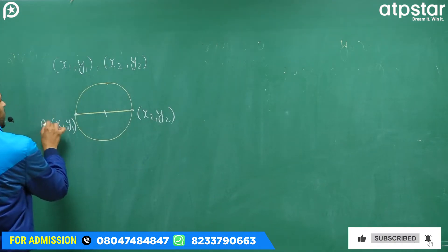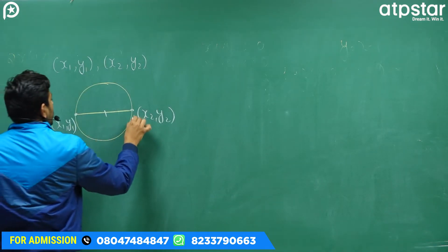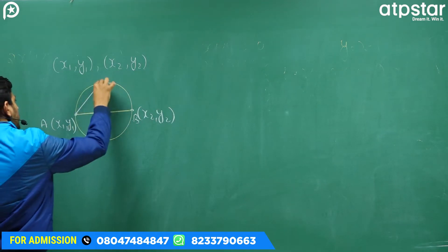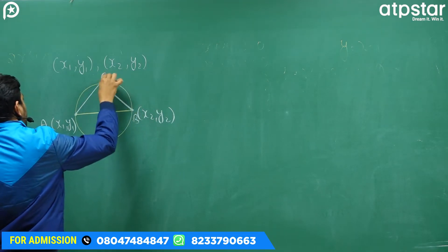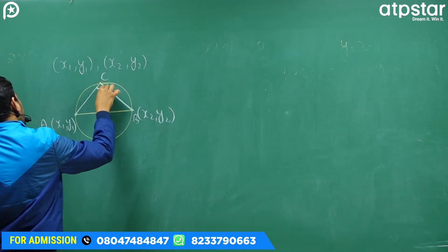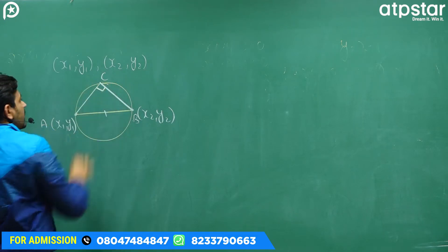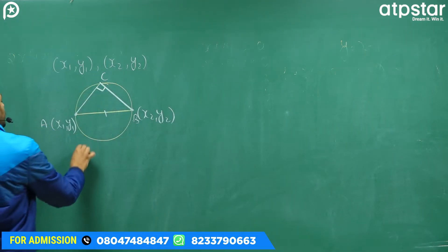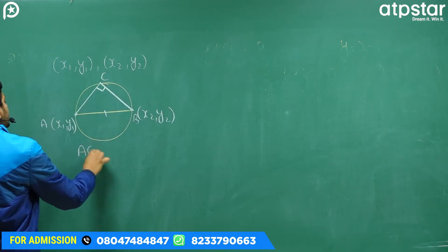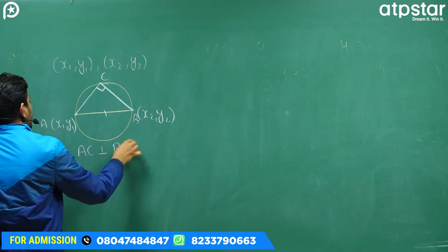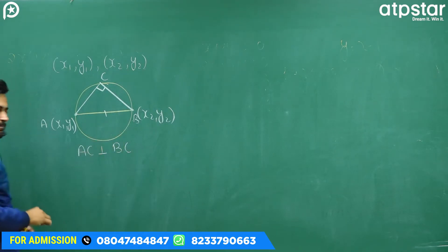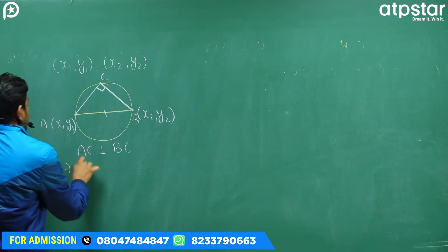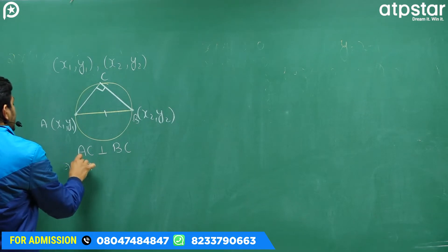एक और तरीका: A और B endpoints हैं, और circumference पर कोई भी point C लेते हैं। Diameter हमेशा circumference पर 90° का angle subtend करता है — यानी AC perpendicular है BC के। इसका मतलब AC line का slope...